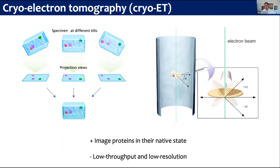One of the things associated with cryo-electron tomography is that this is essentially a low throughput technique that yields essentially very low resolution. The focus of my talk is how do we go about actually changing that - making this a high throughput technique that can actually achieve higher resolution.